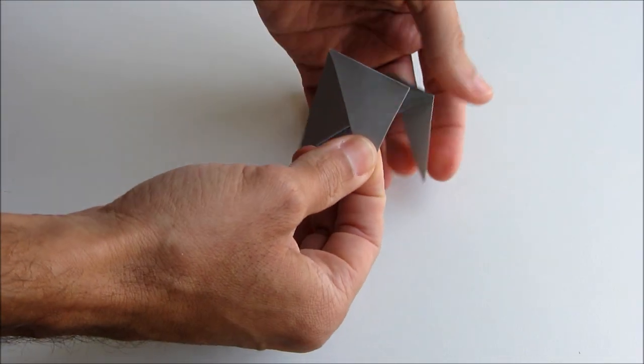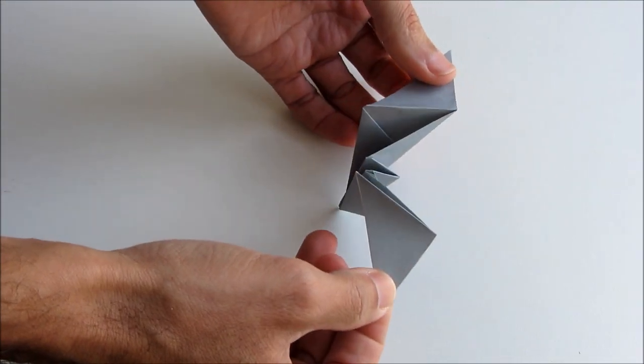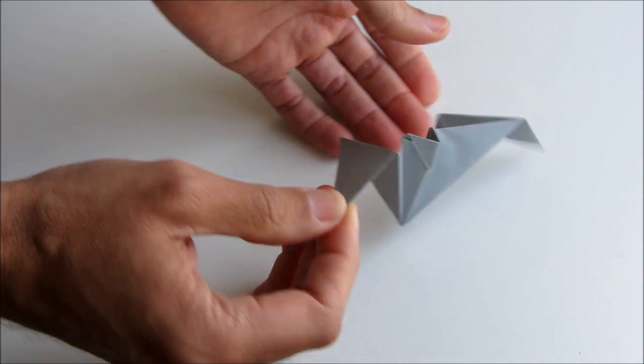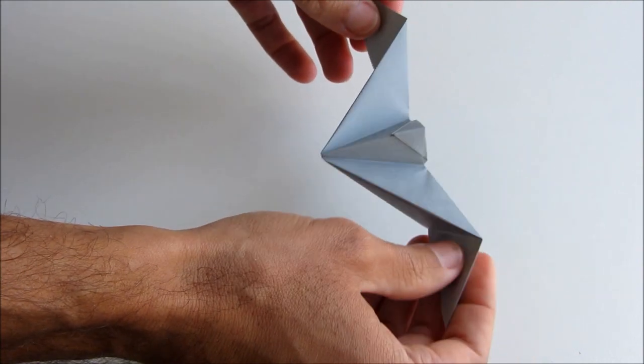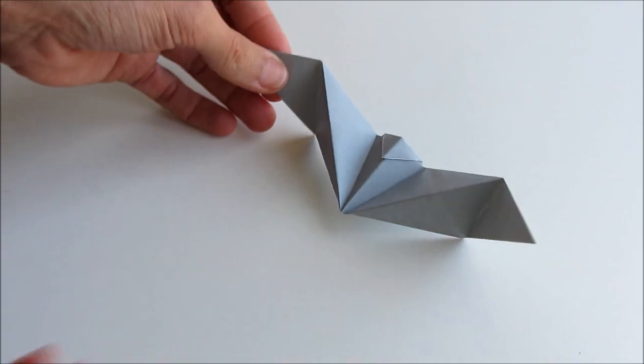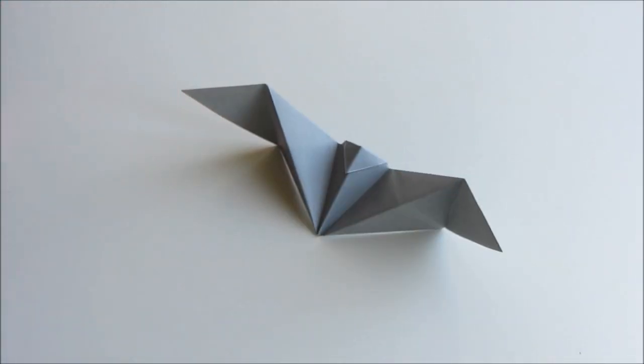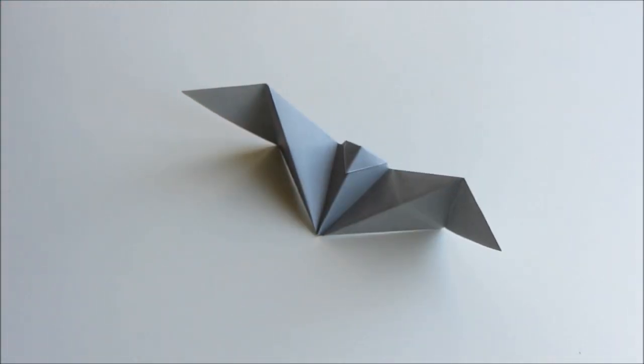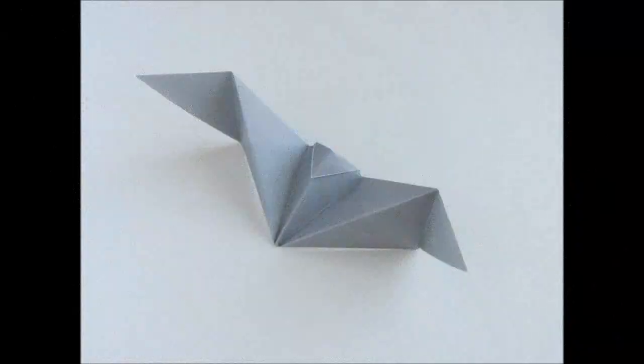Now all we need to do is hold the two wing tips and unfold the piece gently like this. And there you have it. Your origami bat is complete. Enjoy.